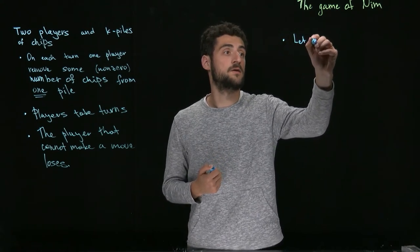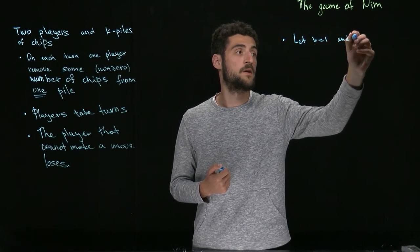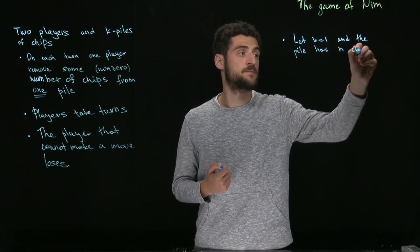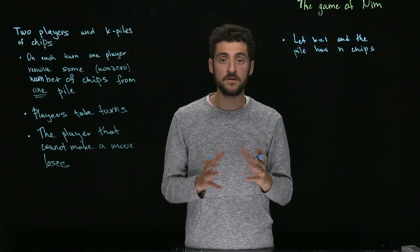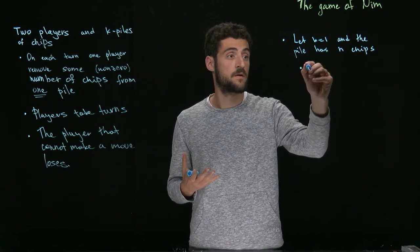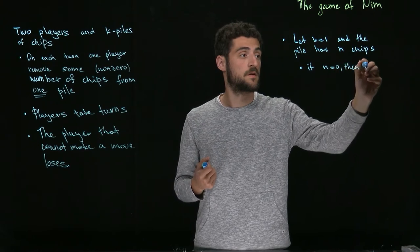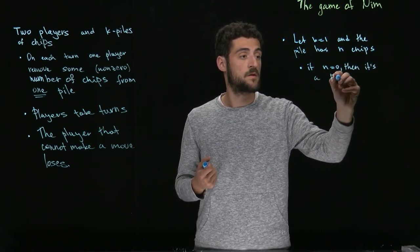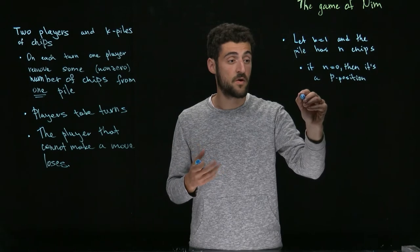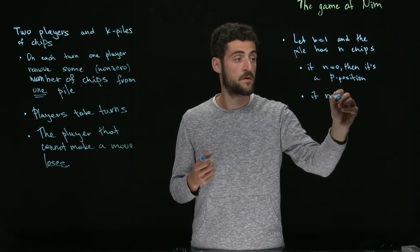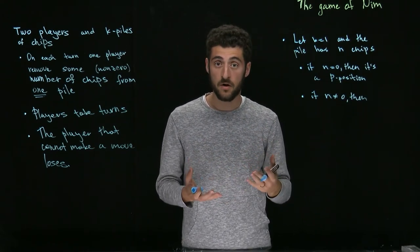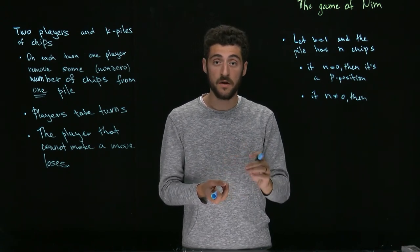Let k be equal to one, and the pile has n chips. It is easy to see that if n is equal to zero, so we don't have any pebbles, that's a P position. Similarly, if n is not equal to zero, then we can remove all the chips from this pile and get zero, so we can go to a P position. So, any other position is an N position.